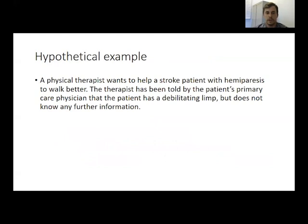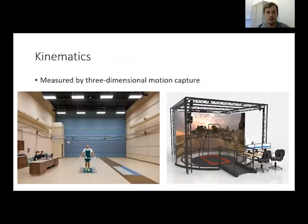Throughout these modules, we'll walk through a hypothetical example. A physical therapist wants to help a stroke patient with hemiparesis to walk better. The therapist has been told by the patient's primary care physician that the patient has a debilitating limp, but does not know any further information. So how can we help? The first thing we'll do is study this person's movement — we'll study their kinematics.